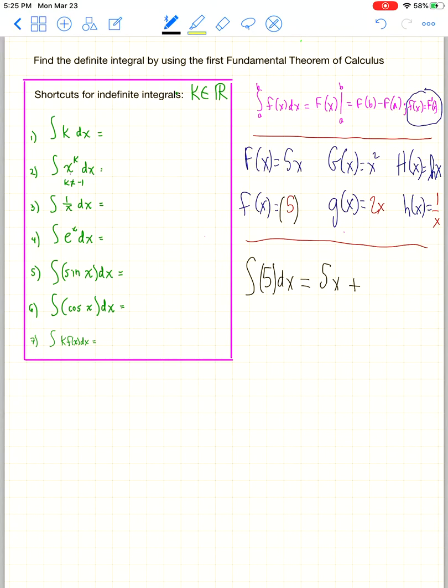The derivative of 5x plus any number is 5. So you are required to put a c when you have an indefinite integral. When you do not have a b or an a value here, it's an indefinite integral, and you should always put plus c, including on delta math.